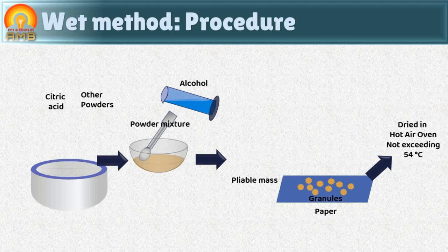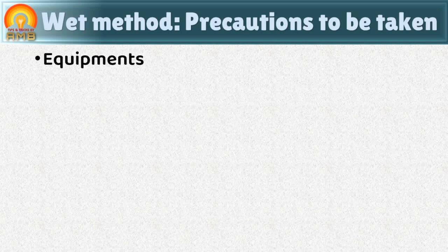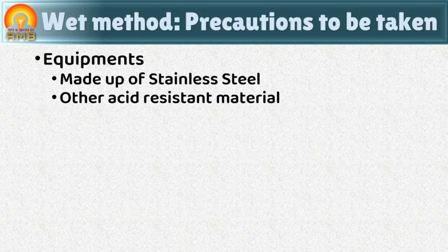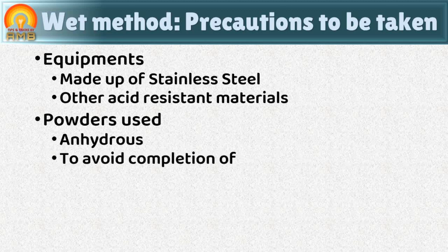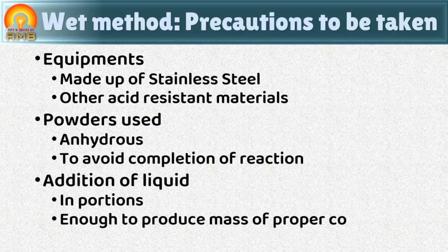While preparing effervescent granules by the wet method, precautions must also be taken. Equipment should be of stainless steel or acid-resistant material. All powders used must be anhydrous; if hydrous powders are used, the water of crystallization they contain can rapidly react with the water in the alcohol, completing the reaction prematurely so that the granules do not produce effervescence. Additionally, just enough liquid should be added in portions to prepare a mass of proper dough consistency. If more liquid is added, it also leads to completion of the reaction and no effervescent granules are produced.